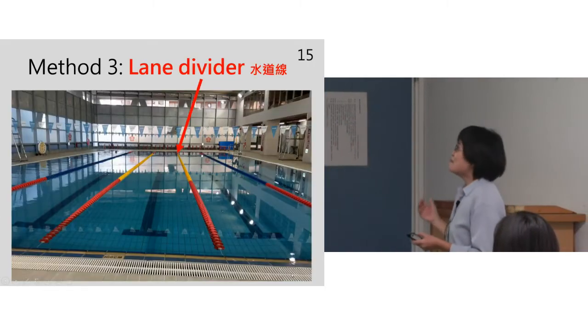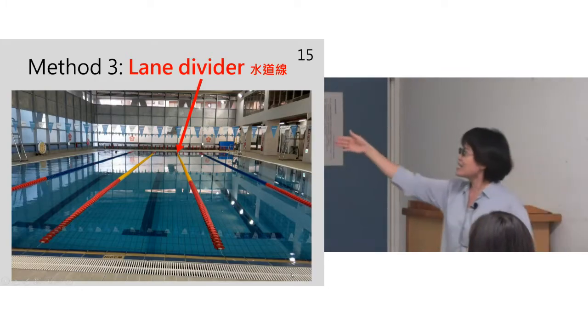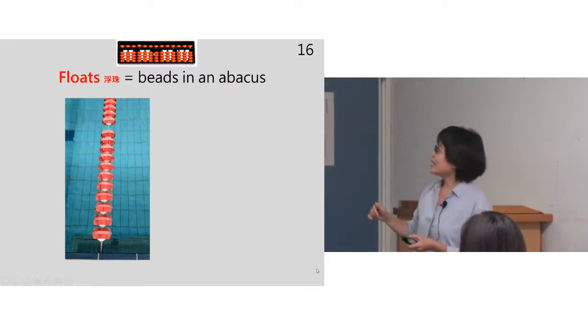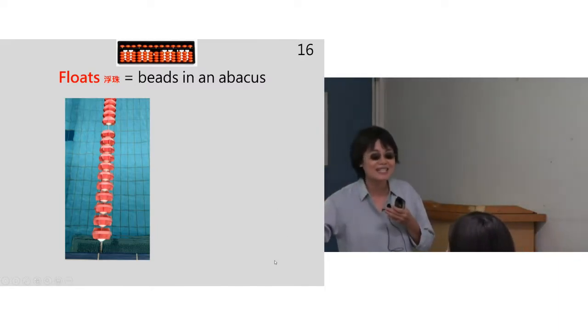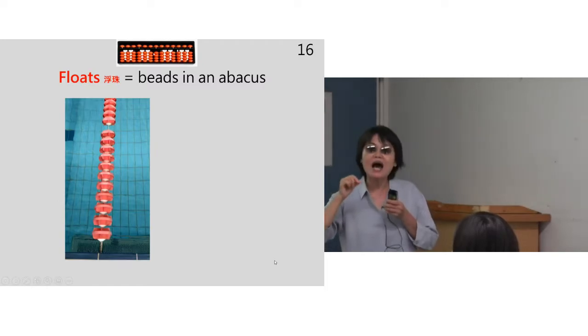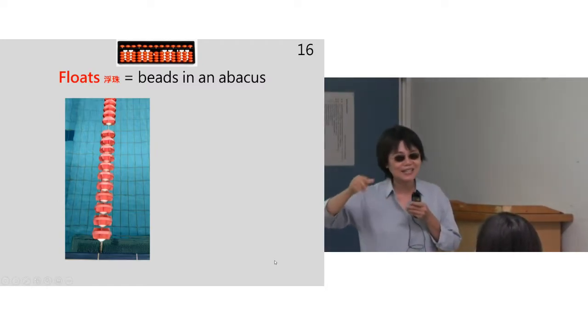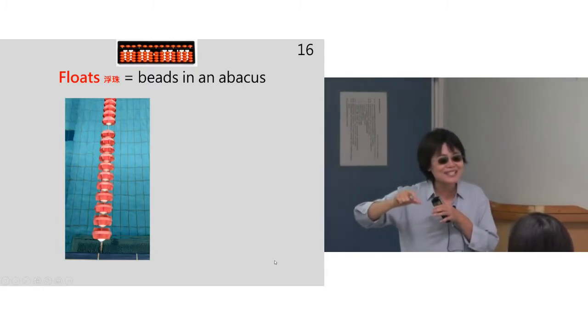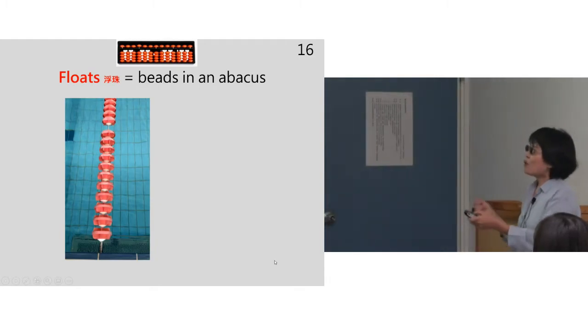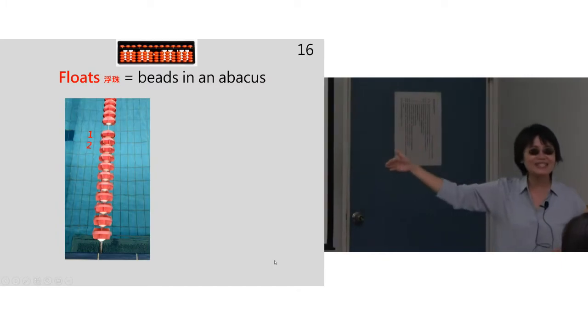Method three: lane dividers. These are the lane dividers. It's a long rope with many floats in it. And you can slide the floats, like the way you move the beads in an abacus. So this is what I did: when I begin swimming I will set ten floats like this, and when I finish a lap I will move the floats, one float backward.